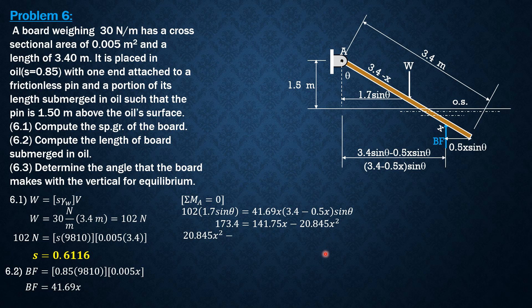Rearranging, 20.845x square minus 141.75x plus 173.4 equals 0. Solving for the roots of this quadratic equation gives us 5.201 meters, which is an absurd value because it exceeds the length of the board. The only acceptable value is 1.6 which is less than 3.4. This is the length of the board submerged in oil.